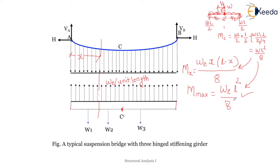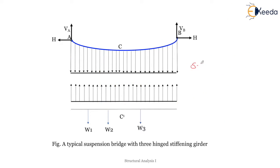This particular moment is of hogging nature, so it is negative. The shear force at any section x due to the UDL is: w_e × (L/2 − x). This cable can be analyzed for the uniformly distributed load w_e based on these formulas. Now let us solve a numerical problem.